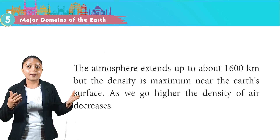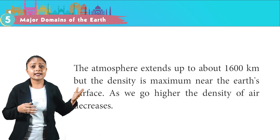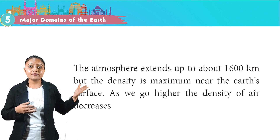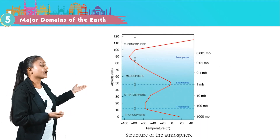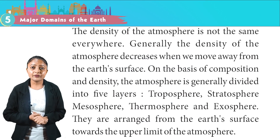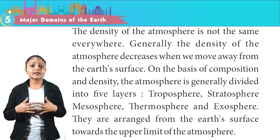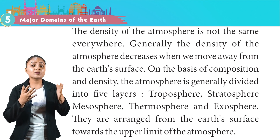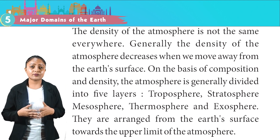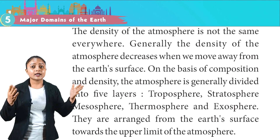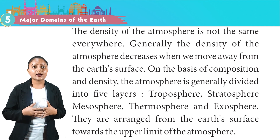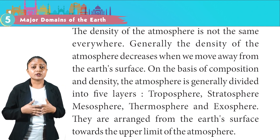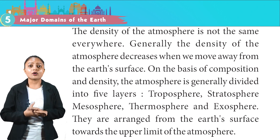The atmosphere extends up to about 1600 km but density is maximum near the earth's surface; as we go higher, the density of air decreases. On the basis of composition and density, the atmosphere is generally divided into five layers: troposphere, stratosphere, mesosphere, thermosphere and exosphere, arranged from the earth's surface towards the upper limit of the atmosphere.